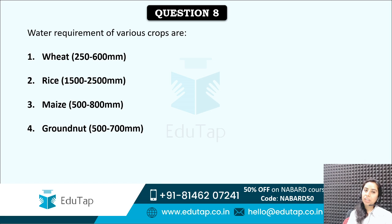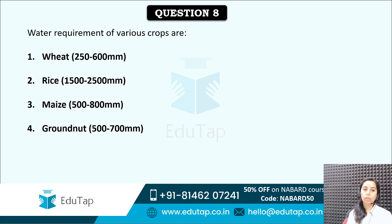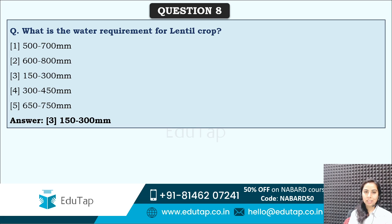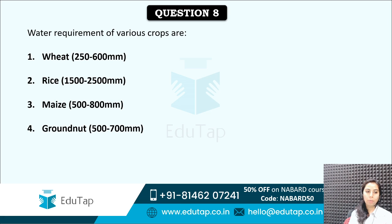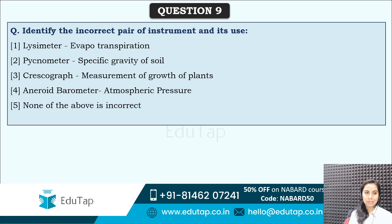Water requirement of various crops: wheat is 250 to 600 mm, rice is 1500 to 2500, maize is 500 to 800, groundnut is 500 to 700 mm. The international year of millets was 2023 — that was the correct answer. Apart from lentil, these four other important crops are also here. Do recall this in the examination.